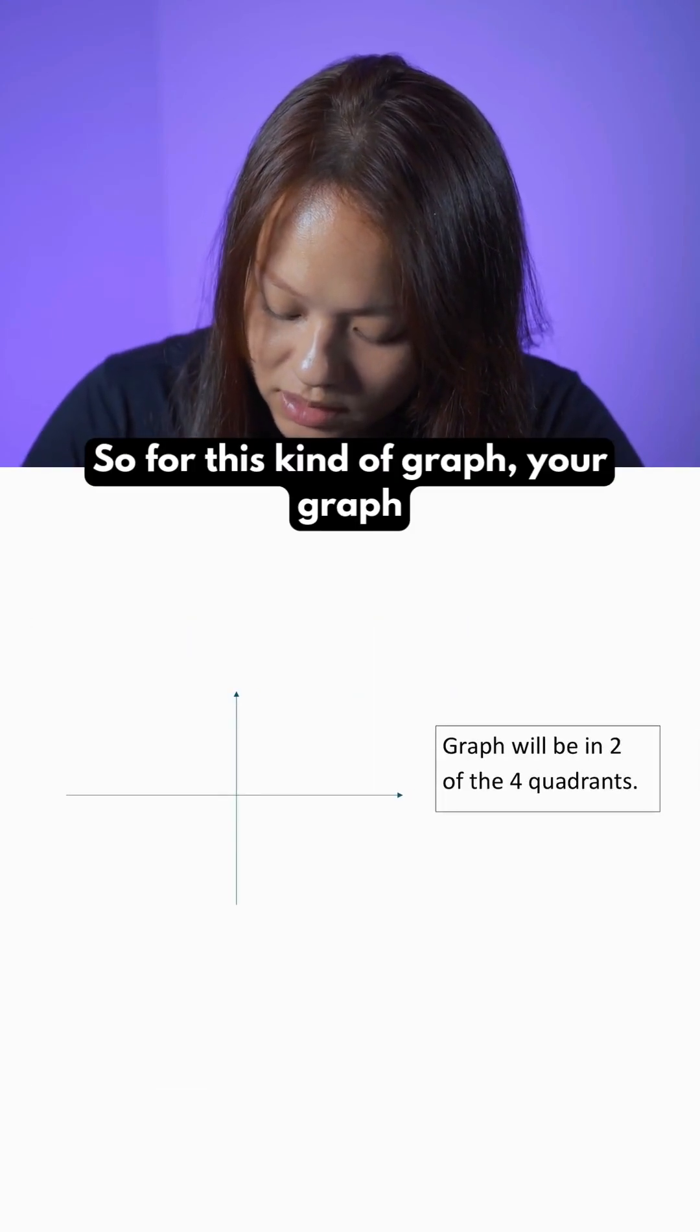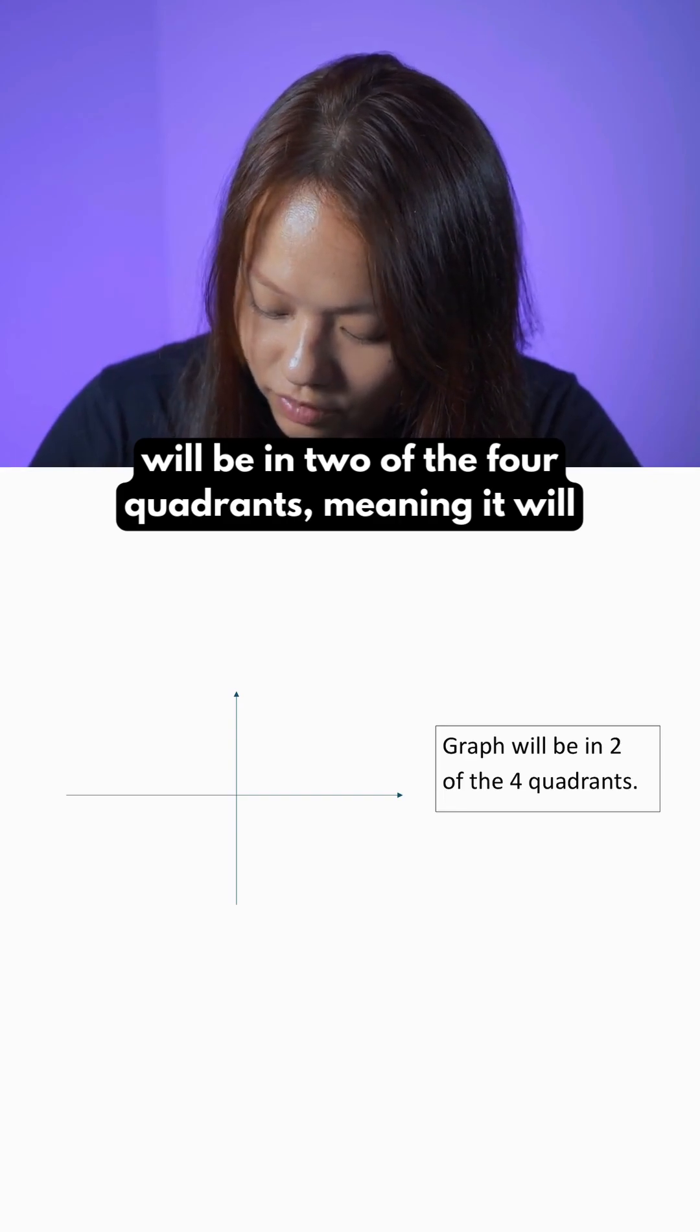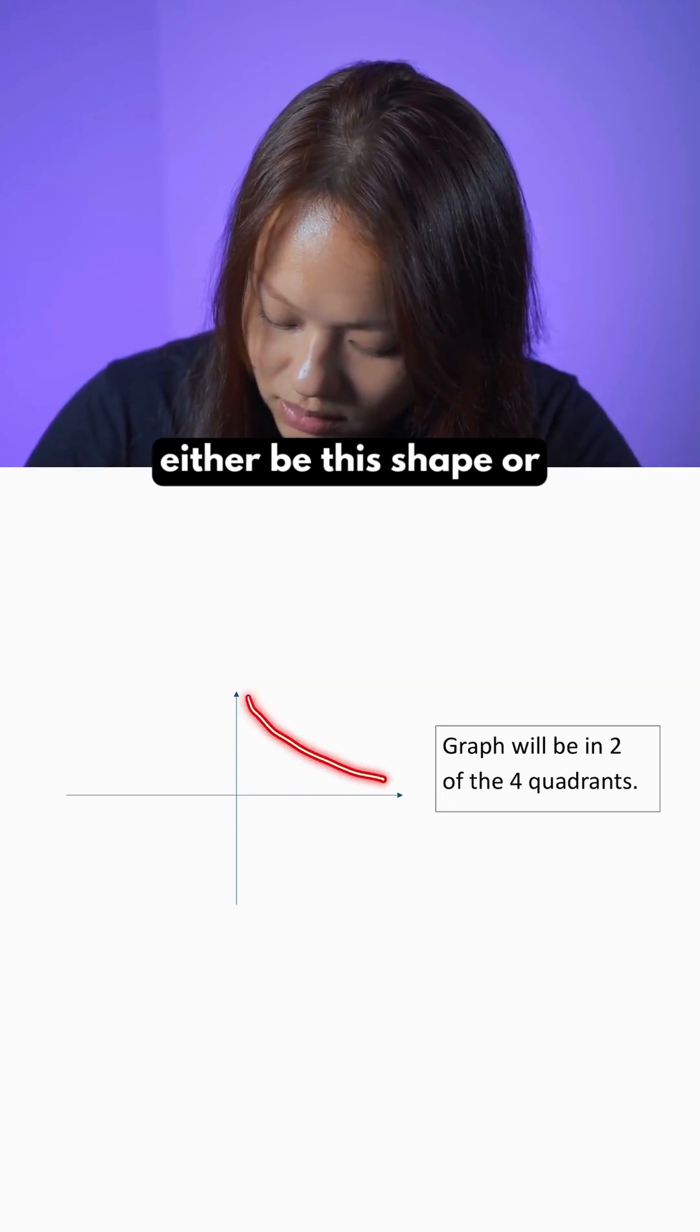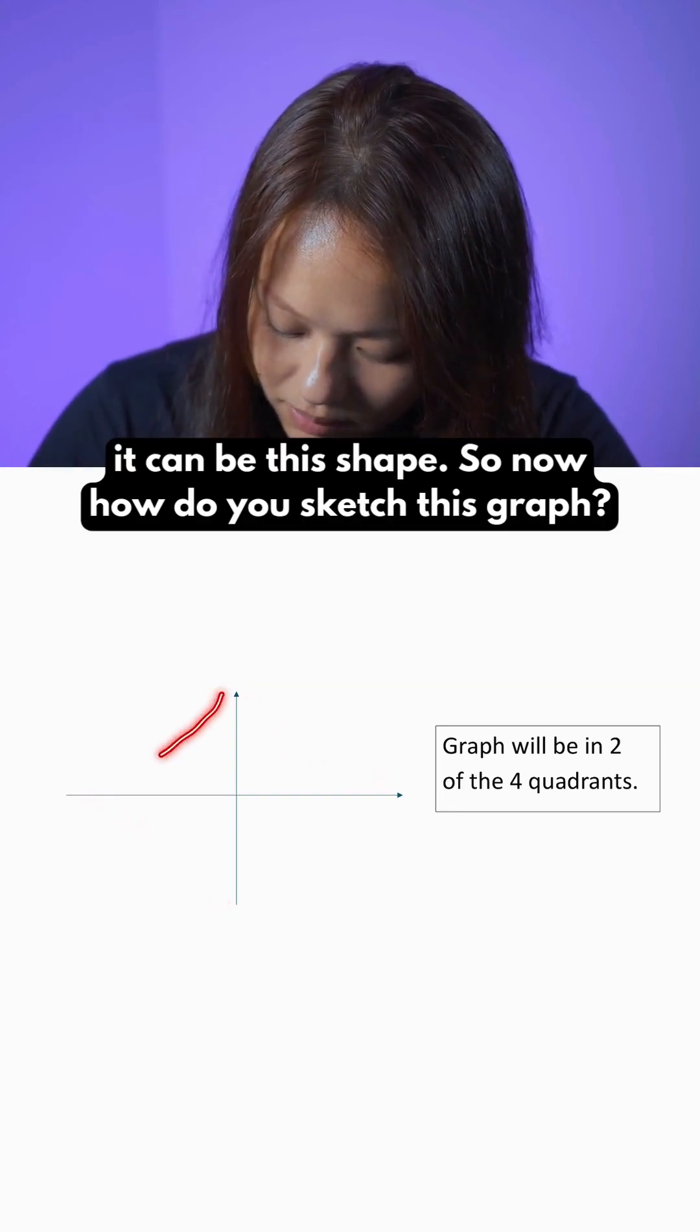So for this kind of graph, your graph will be in 2 of the 4 quadrants, meaning it will either be this shape or it can be this shape.